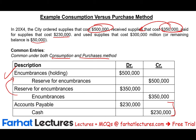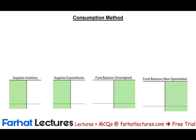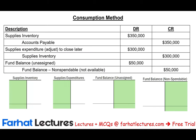Now let's look at the consumption method. Under the consumption method, first we debit an asset called supplies inventory for $350,000 and credit accounts payable. Then at the end of the year — remember, $50,000 is remaining and $300,000 was consumed — we credit supplies inventory and debit expenditure $300,000. So the supplies inventory T-account starts at $350,000, is reduced by $300,000, and is left with $50,000.